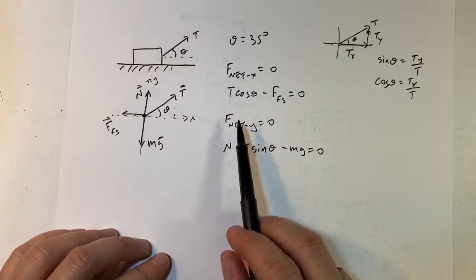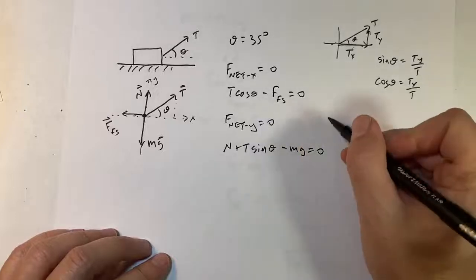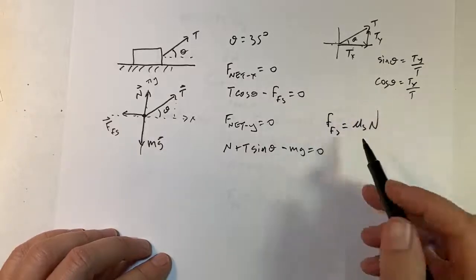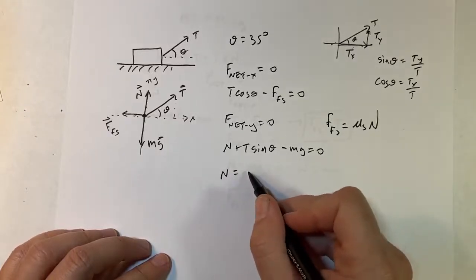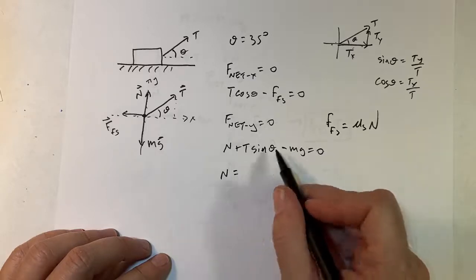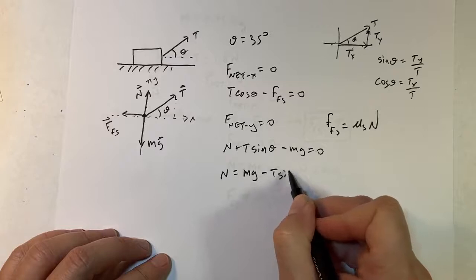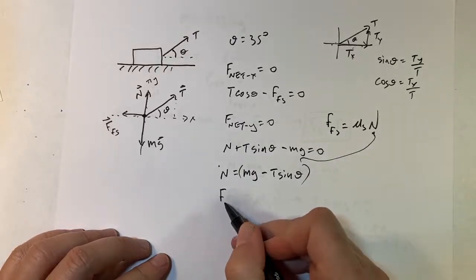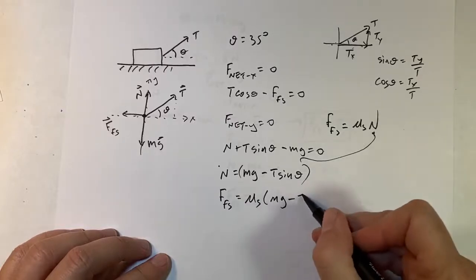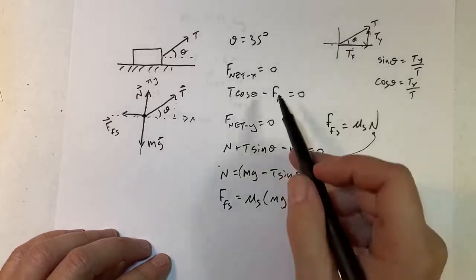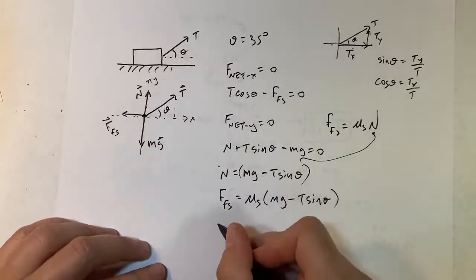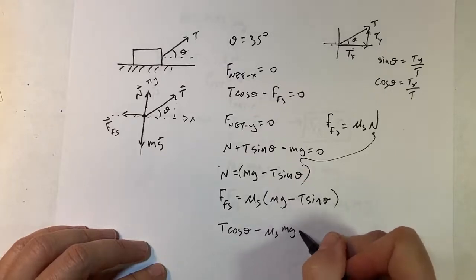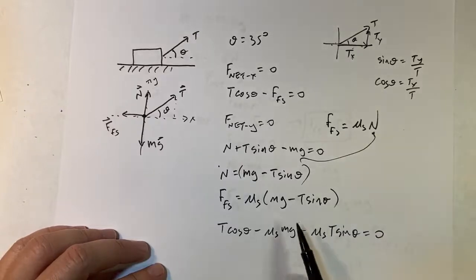I want to solve for T. First I need the friction force. At the point of sliding, static friction equals μ_s times N. So I need the normal force. From the y equation: N equals mg minus T sine theta. Substituting, the static friction is μ_s times (mg minus T sine theta). Putting that into the x equation: T cosine theta minus μ_s mg minus μ_s T sine theta equals zero, and I want to solve for T.